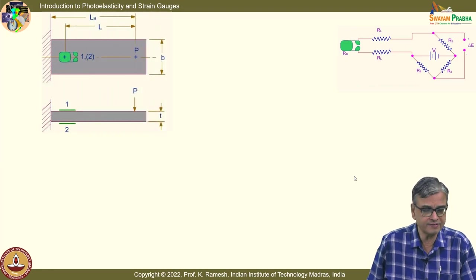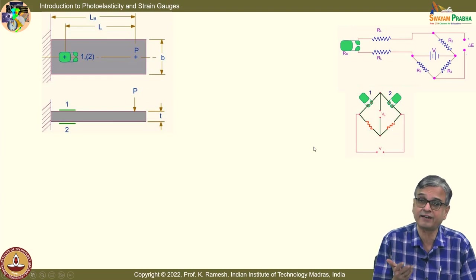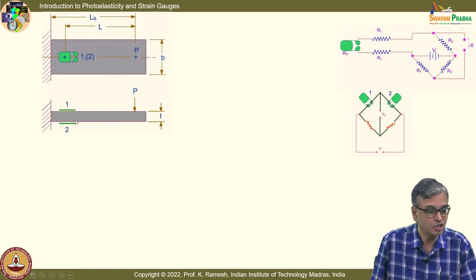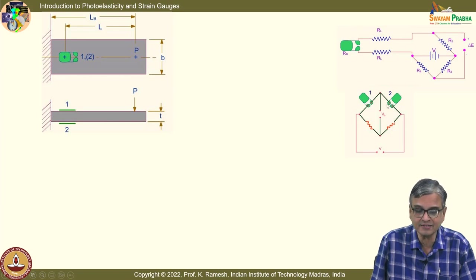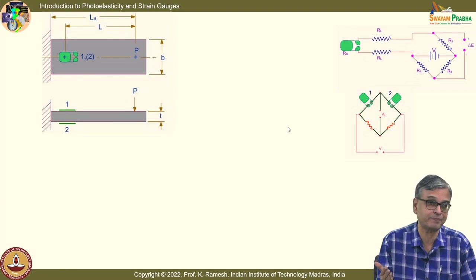Another discussion is how to connect the strain gauge in a Wheatstone bridge. If you do not connect them properly, you may get wrong results. In transducer applications, you want to maximize the signal. In a cantilever beam, when load is applied, one side is in tension and the other in compression — these are strains in opposite directions. Connect them in adjacent arms so that the strain magnitudes add up, amplifying the signal.